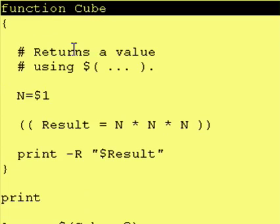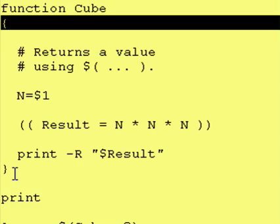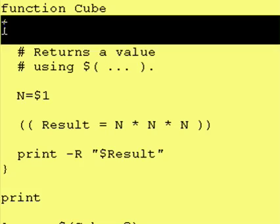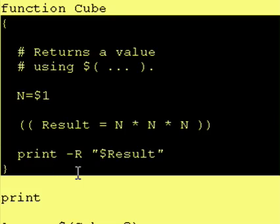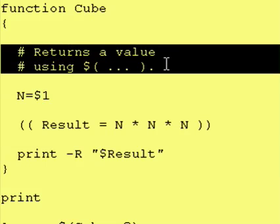Once again, you use the word function, give the function name. In this case, it's cube. It's going to cube the input value that we give it and cube is equal to anything from the open curly brace to the closed curly brace. Every time we type in the word cube, all the commands from here to here end up getting run. And just a brief comment about what the function does.